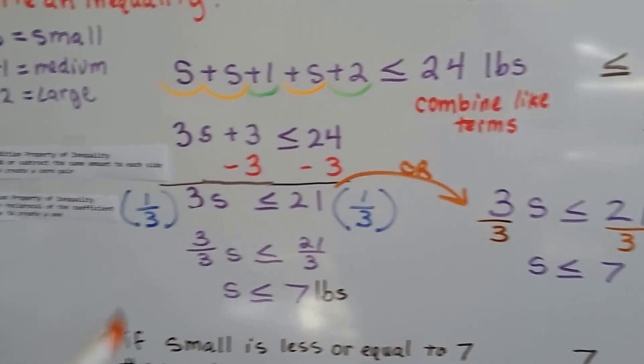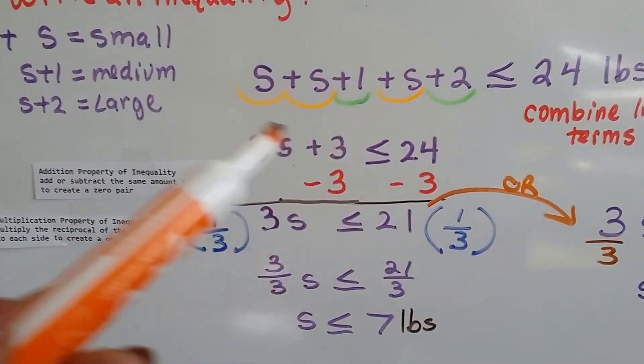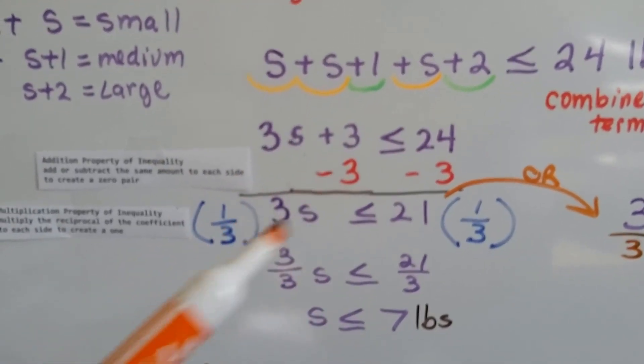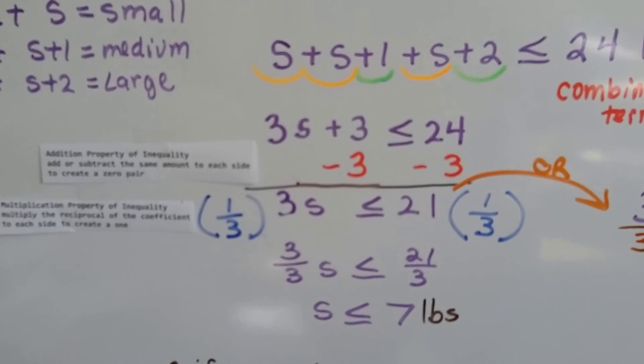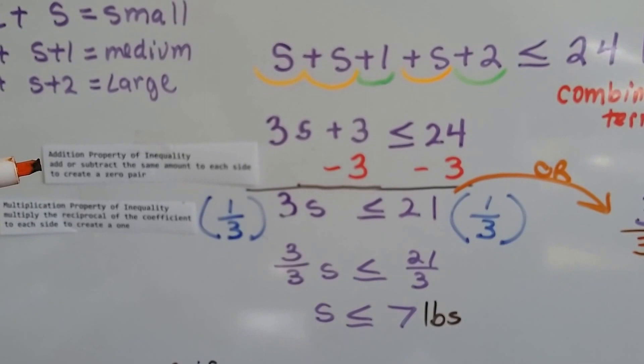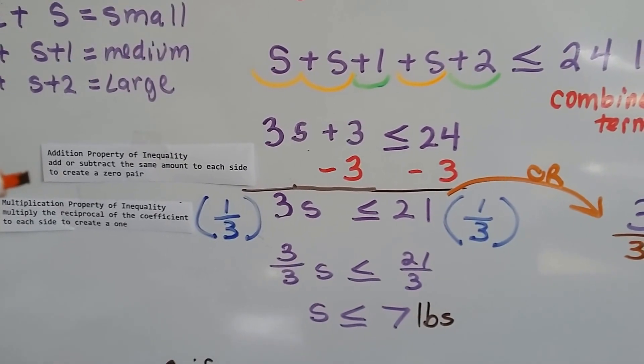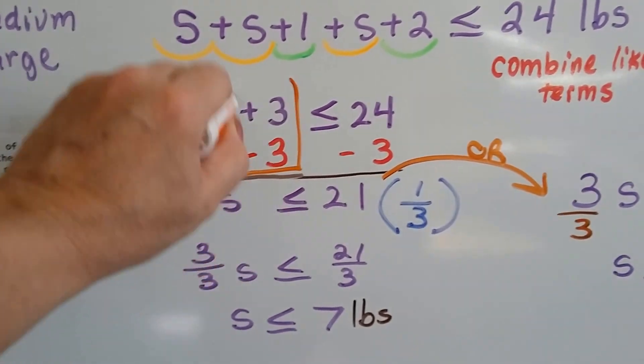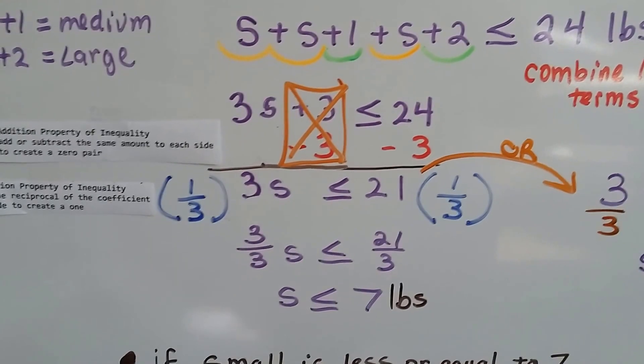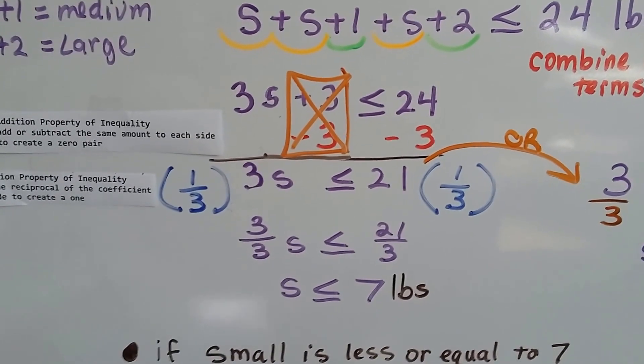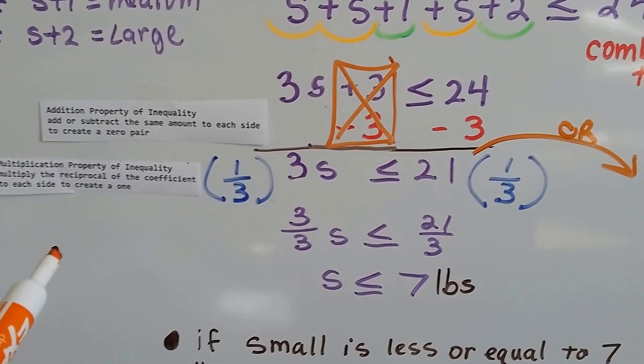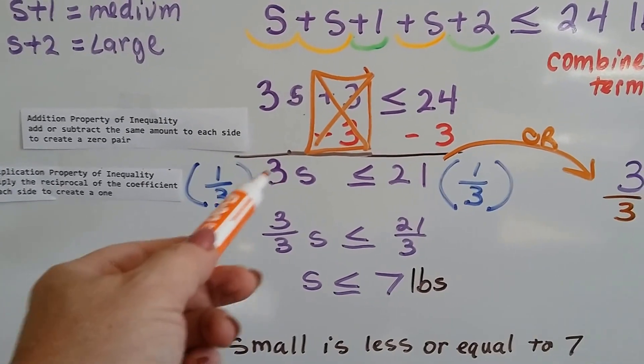We combine the like terms, and we've got 1, 2, 3 s's in the orange, and we've got in the green a 1 and a 2 makes a 3, so we've got 3s plus 3 is less than or equal to 24. Now, we use the addition property of inequality to add or subtract the same amount from each side to create a zero pair. We create a zero pair right here. We eliminate that 3. And on this side, on the right side, we've got a 21. 24 minus 3 is 21.